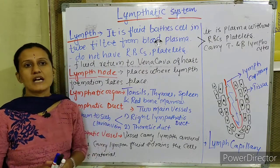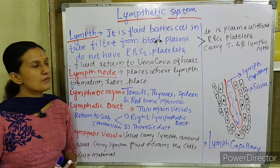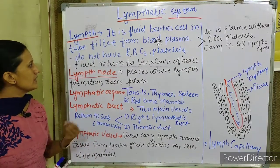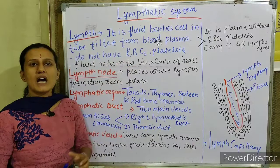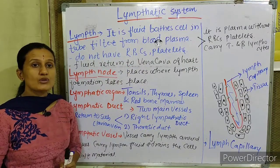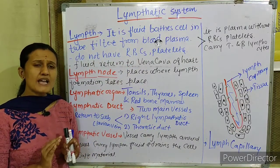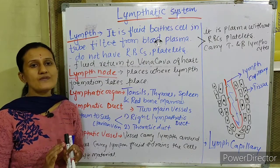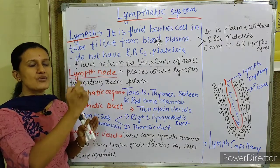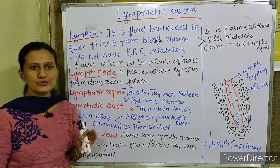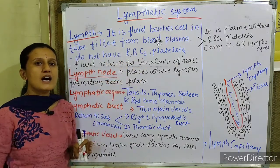The lymphatic system acts as a drainage system of the body. The fluid returns to the vena cava of the heart. Blood has a bidirectional flow — from lungs to heart, heart to body tissue, from body tissue to heart, heart to lungs.